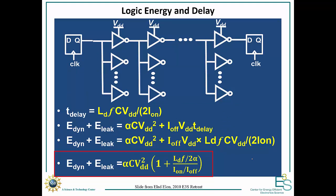And so we can then just simplify this by plugging in the delay into here, and then combining terms. And what we find is that we have the alpha CV squared, the dynamic power, times 1 plus the logic depth times the fan out over 2 times the activity factor divided by the on-off current ratio.